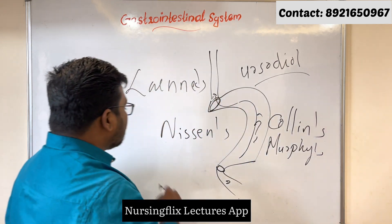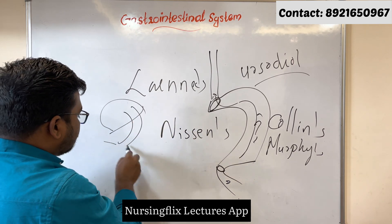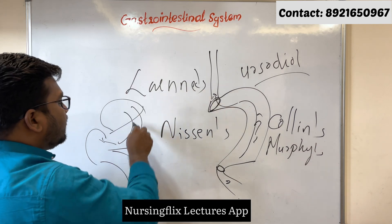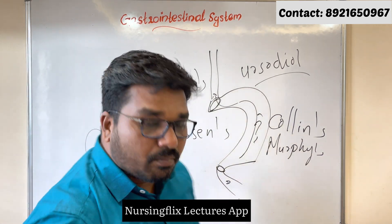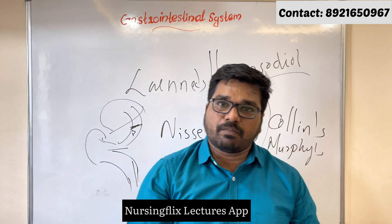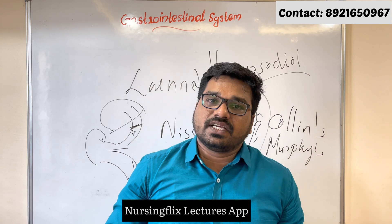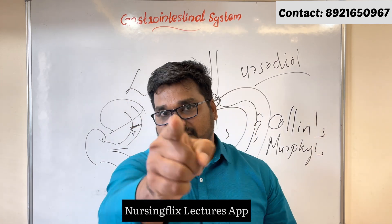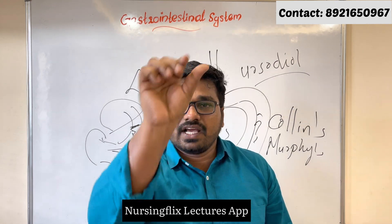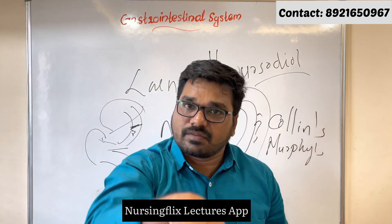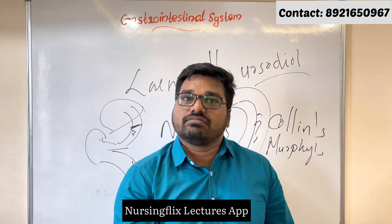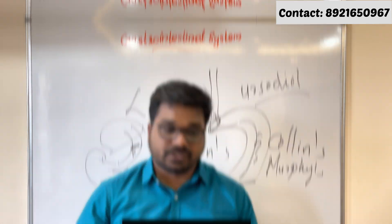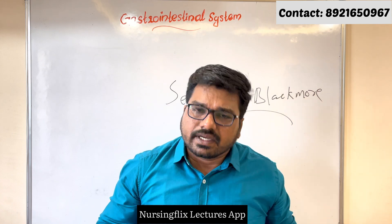In biliary cirrhosis, the problem is biliary stasis — bile stasis, meaning accumulation. Any block in the bile flow results in accumulation of bile in the liver, which causes liver damage and inflammation, ultimately progressing to cirrhosis. The cause here is biliary obstruction and bile stasis, which is why it is called biliary cirrhosis.